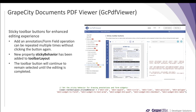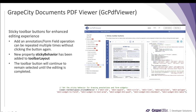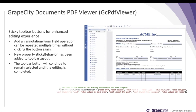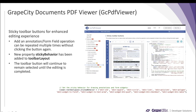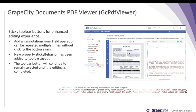Moving on to GcPDF Viewer — in this release we have added the ability to define sticky behavior for certain toolbar buttons, which can be form fields or annotation buttons in the toolbar. If you are designing a PDF form and want to add certain form fields without going back and forth to the toolbar, you can set the sticky behavior property of the toolbar layout to the set of buttons you want to make sticky. When you select them from the toolbar and drop them, you can continuously keep adding those form fields on the PDF document without going back to the toolbar again.